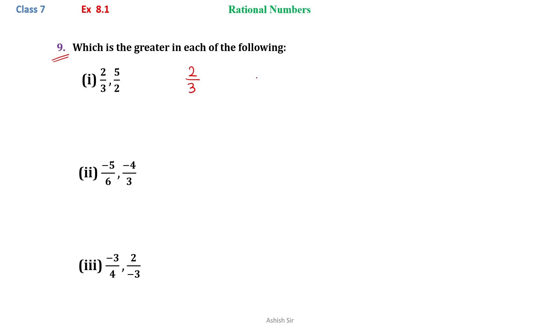We can directly use the cross multiplication method to find which one is greater. 2 into 2 is on the left and 3 into 5 is on the right. We find 4 and 15. Since 15 is greater on the right, we can write that the fraction on the right, 5 by 2, is greater.